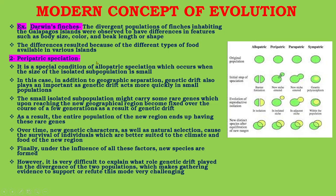Next is peripatric speciation — a special condition of allopatric speciation that occurs when the size of the isolated subpopulation is small. In addition to geographic separation, genetic drift also plays an important role, as it acts more quickly in a small population. The small isolated subpopulation might carry some rare genes which, upon reaching a new geographical region, become fixed over the course of a few generations as a result of genetic drift. As a result, the entire population of the new region ends up having these rare genes, and over time new species are formed.